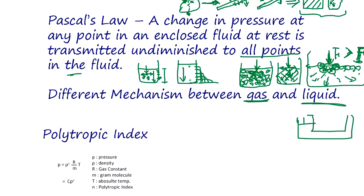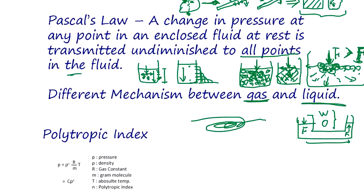If you give a push F, it propagates all the way as the same F — that's water and oil. Of course, over a very long hose, you get less due to friction. But for an ideal liquid with no friction, if you push with force F, it comes out as F.